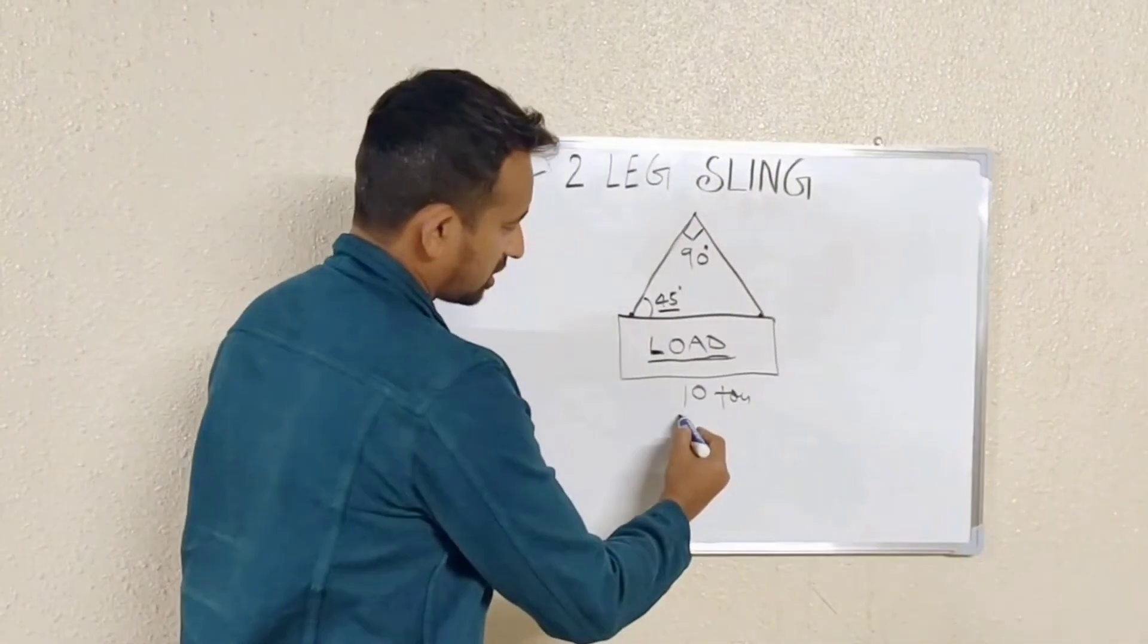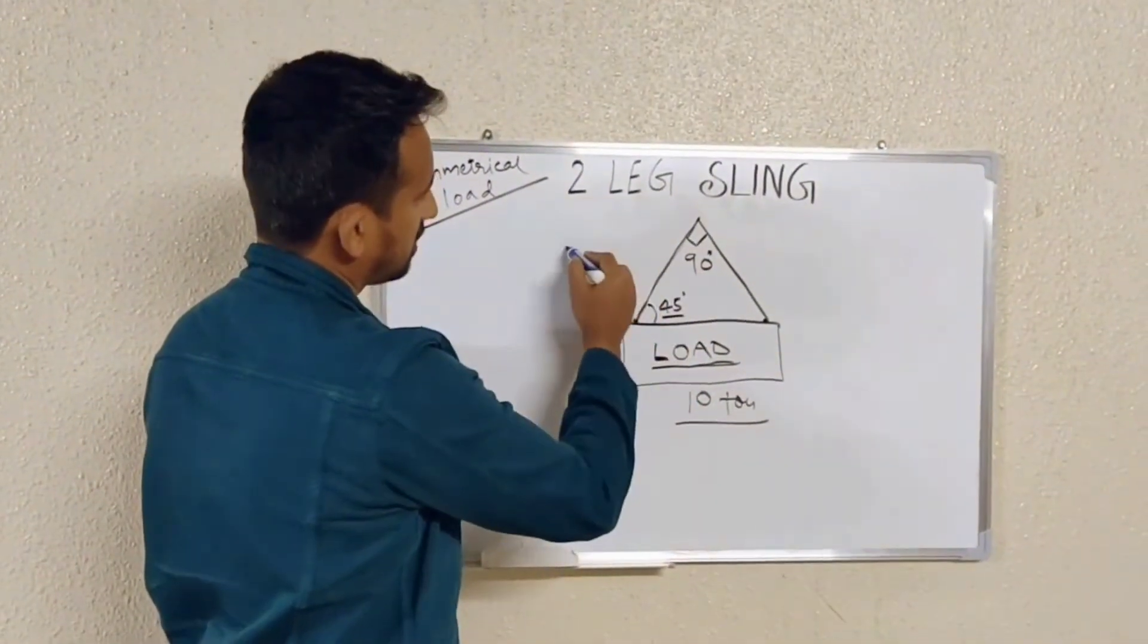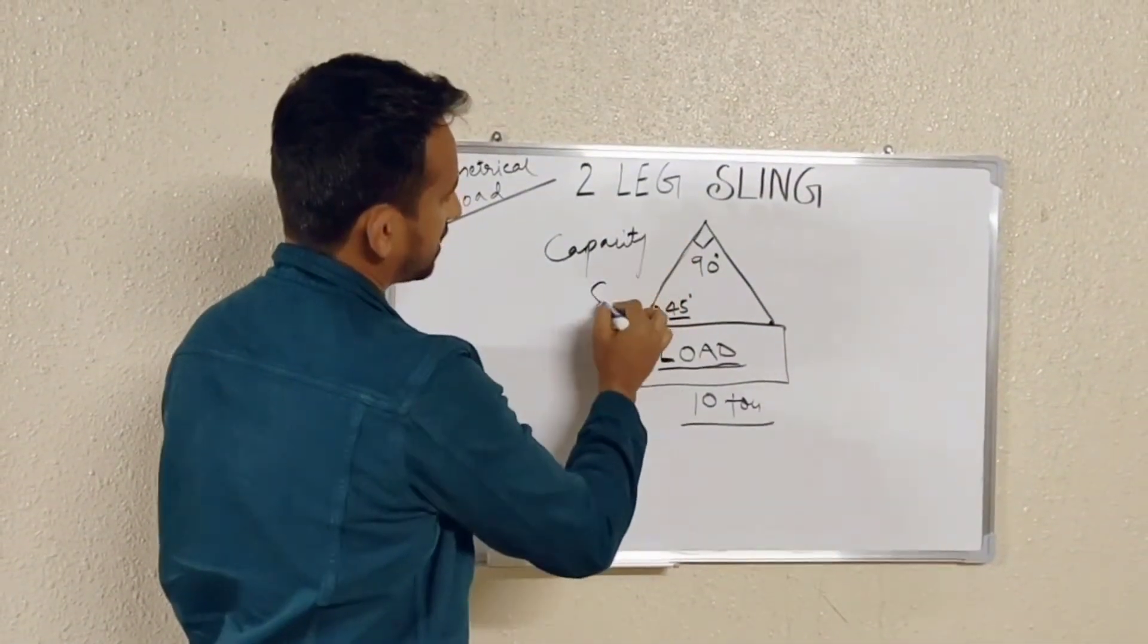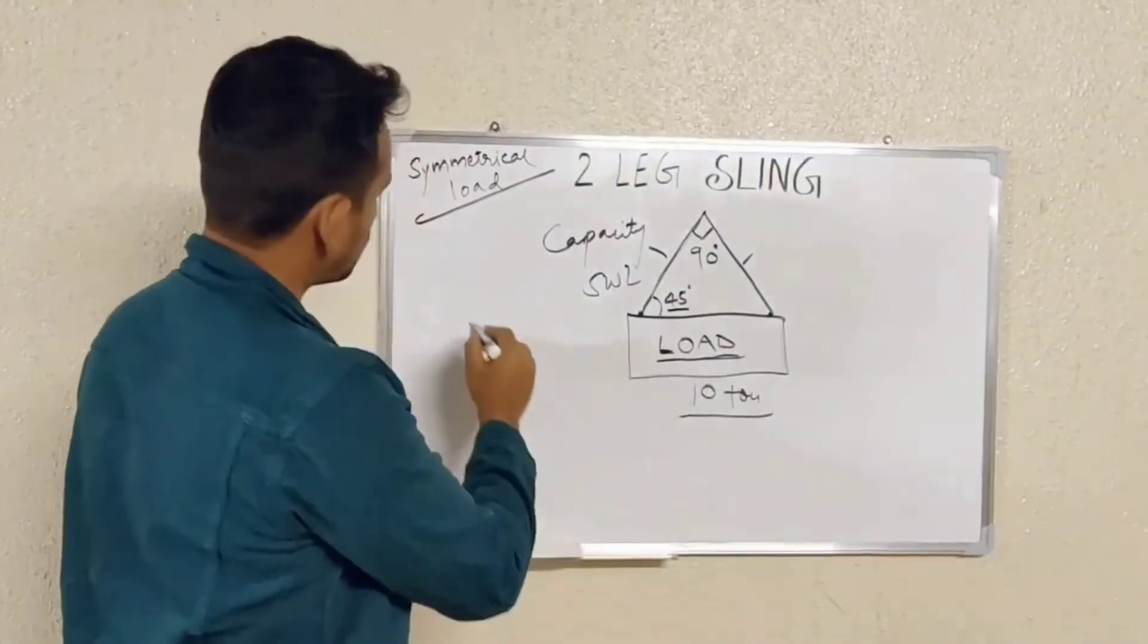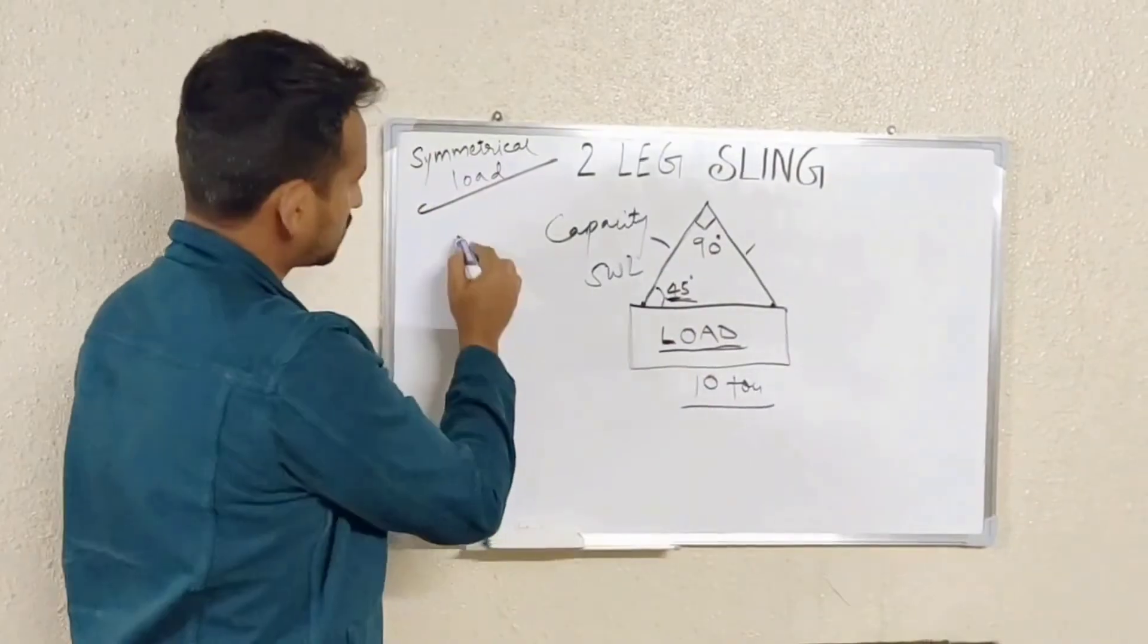So here load is 10 ton, two-leg sling. So capacity of, or say SWL, for each sling we need to calculate. So here we have mode factor for 45 degree sling angle is 1.4.